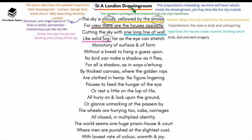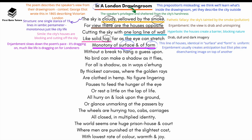The words 'cloudy,' 'smoke,' and 'fog' across the early lines illustrate how drab, dull, and dark this city is — really powerful imagery. The reference to 'monotony of surface and of form' uses enjambment to slow down the pace of the poem, dragging on much like life is dragging on for Londoners. The line of houses is identical in surface and uniform. Eliot uses enjambment somewhat ironically, piling one disenchanting image on top of another. 'Without a break to hang a guess upon' means all the houses look really predictable — there's no mystery to explore, no shape to question, nothing interesting that stands out.